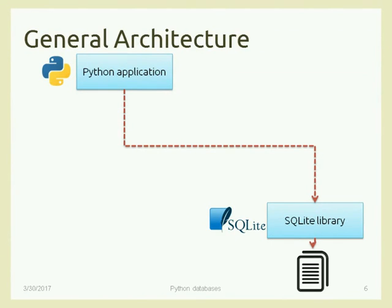Another way of managing databases in Python is SQLite. SQLite is a library — not a service, not an external process, not a separate program. It's just a library. In Python, that's a module that you import. It becomes part of your application. This library is the core of a database management system — it's able to interpret SQL commands and give you the impression that you're talking to a real database, while you're just calling functions in a library.